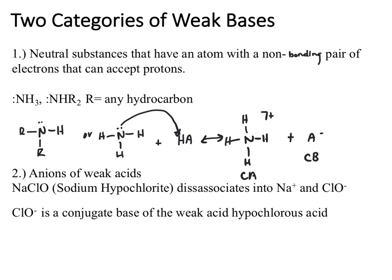This is how these types of compounds can behave as bases. The other category of weak bases are anions of weak acids.